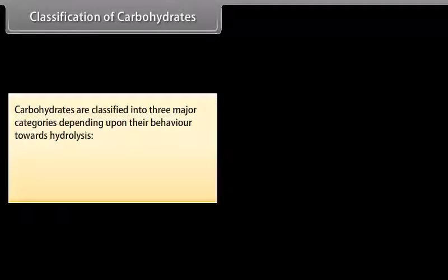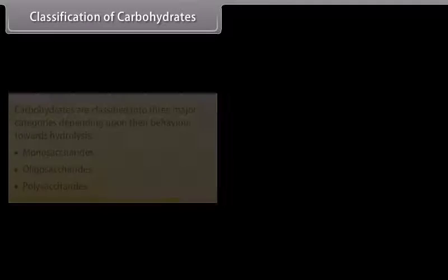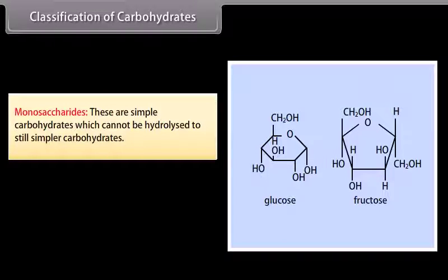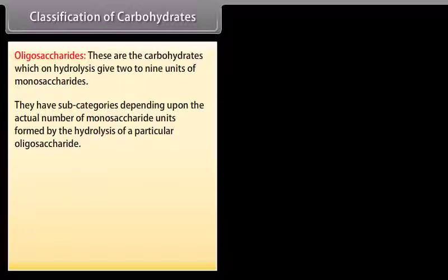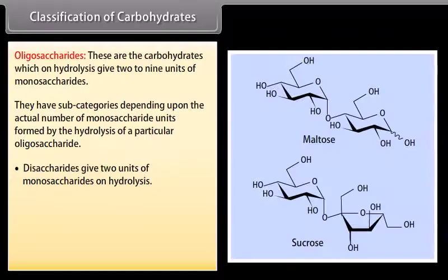Carbohydrates are classified into three major categories depending upon their behavior towards hydrolysis: monosaccharides, oligosaccharides, and polysaccharides. Monosaccharides are simple carbohydrates which cannot be hydrolyzed to still simpler carbohydrates. For example, glucose and fructose. Oligosaccharides are carbohydrates which on hydrolysis give two to nine units of monosaccharides. Disaccharides give two units of monosaccharides on hydrolysis. For example, maltose and sucrose.